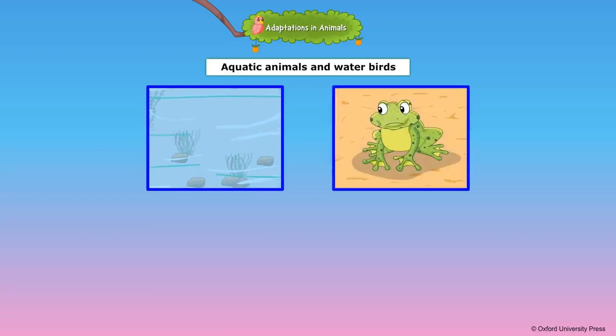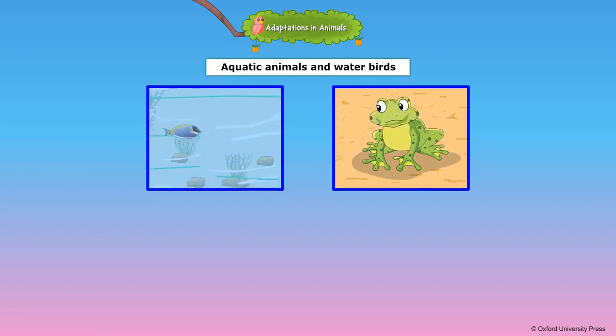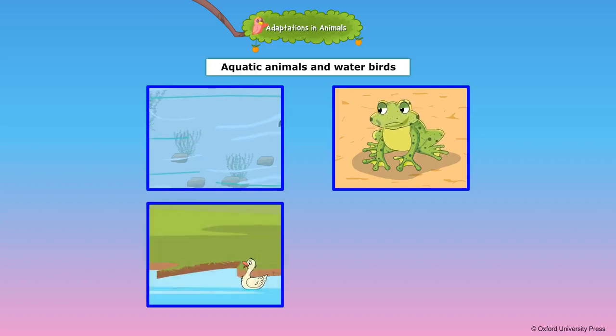A frog is adapted to living both on land and in water. On land it breathes through its lungs and in water it can breathe through its moist skin.